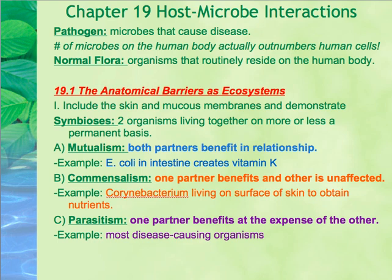One example of mutualism is that you actually have a strain of E. coli that lives in your intestine. The benefit to you is that it creates vitamin K, which your body can't produce on its own. E. coli gets a place to live and free nutrients because you're eating, but then it produces vitamin K as a byproduct, which helps us.